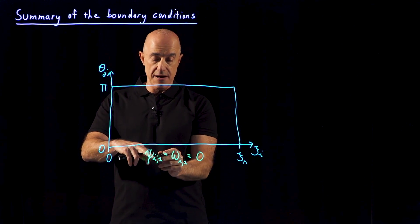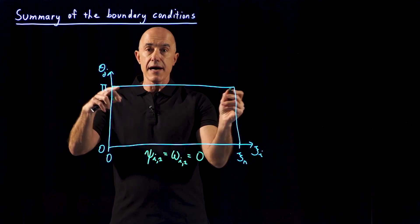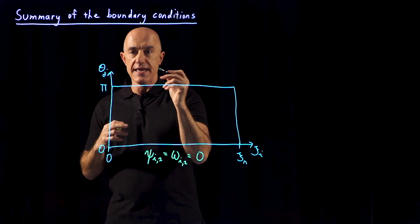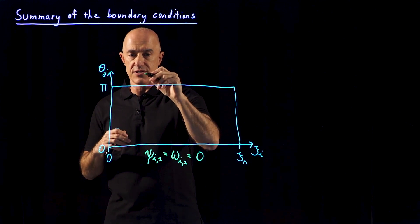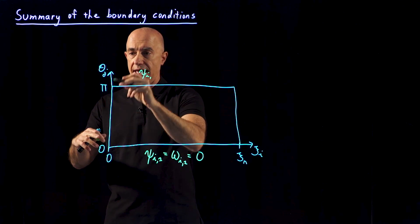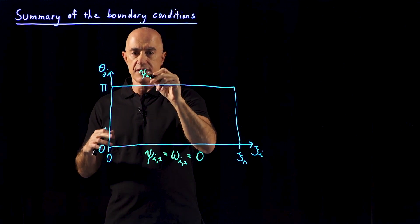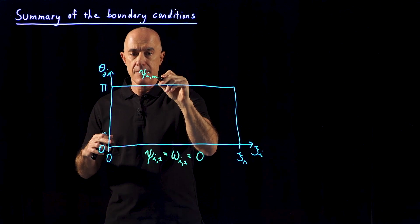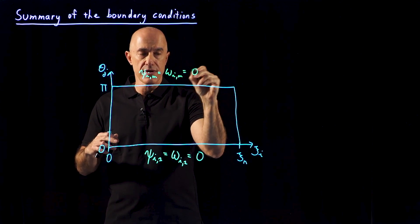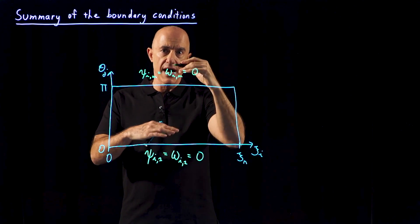This is the midline behind the cylinder. The top side of the rectangle is the midline in front of the cylinder. And again, the fields are 0. So we have m points in the theta direction, giving psi i m equals omega i m equals 0. So those are the two midlines of the flow.